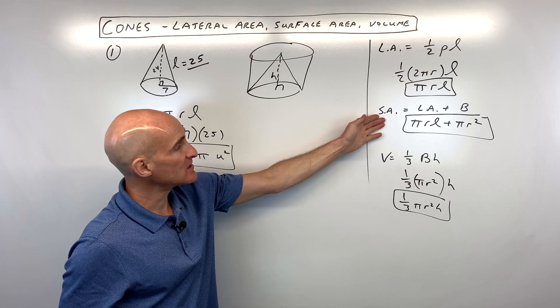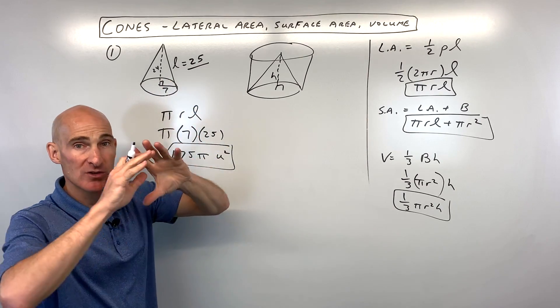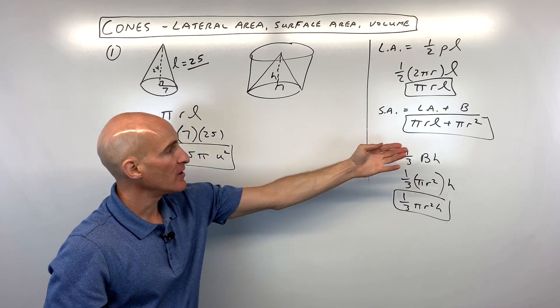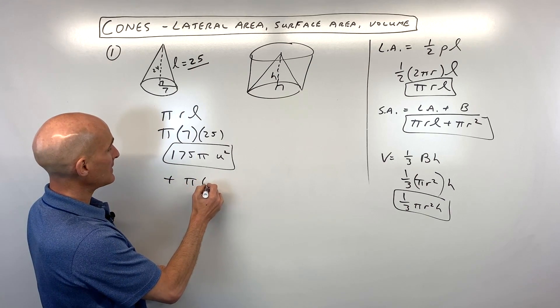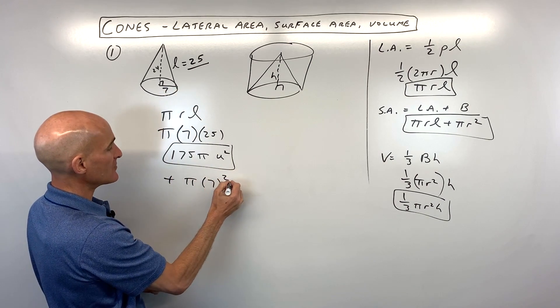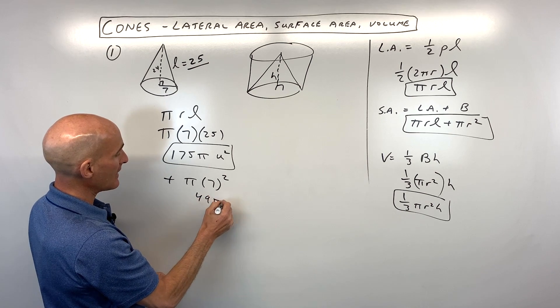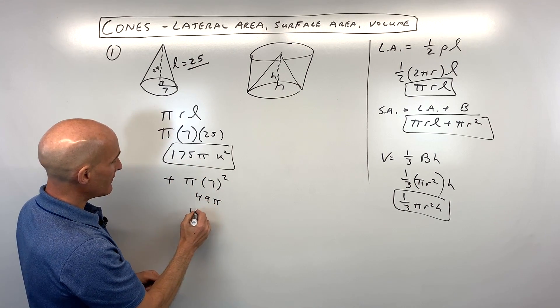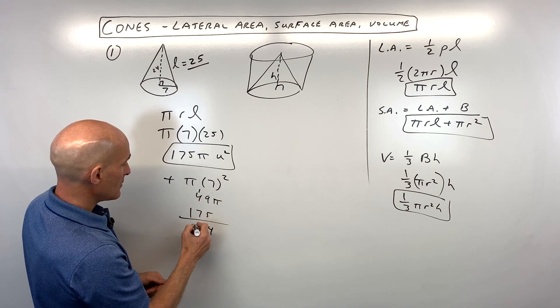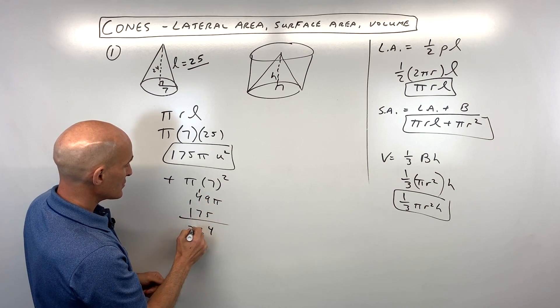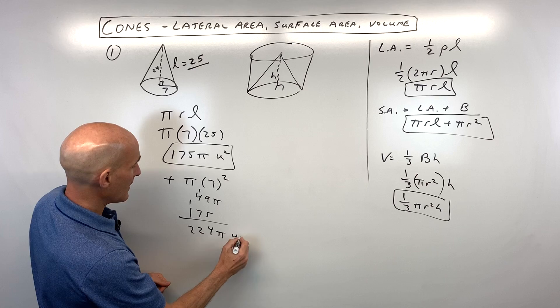If we want to find the surface area, we just have to take the lateral area, which is the sides of the cone, plus the base, which is πr². So we're just going to add on π times the radius, which is 7 squared. That's 49π plus 175. So what does that come out to? We've got 224π units squared.